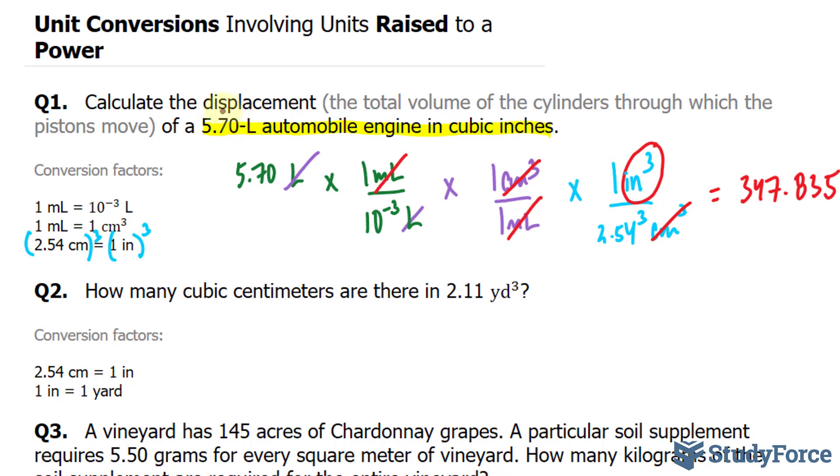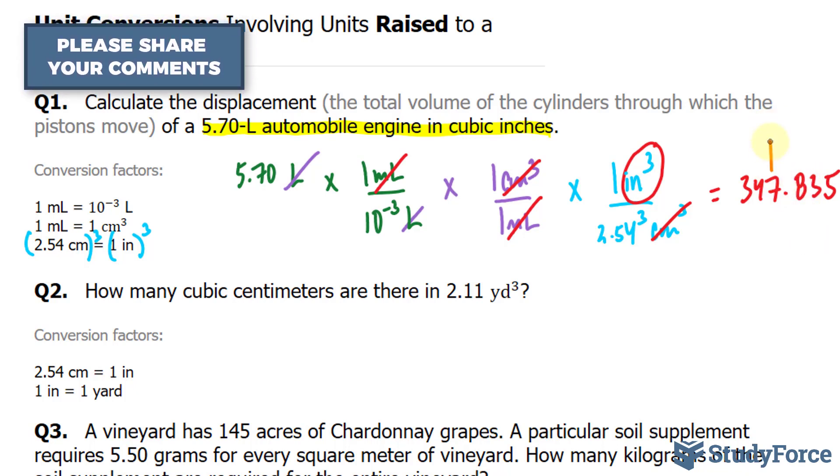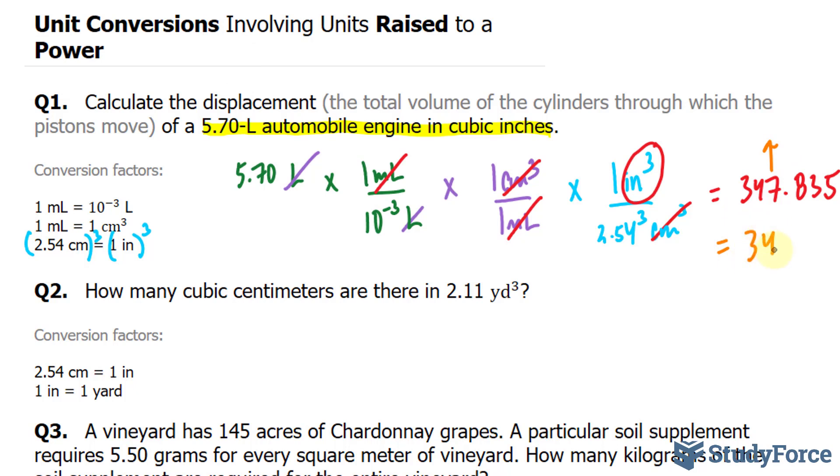Now we started off with three significant figures. Our final answer should also have three significant figures. So anything after the 7 is insignificant. The first discarded number, this 8, is greater than 5, so this 7 will go up by 1, giving us 348 inches cubed.